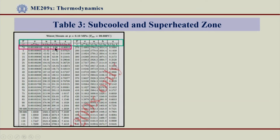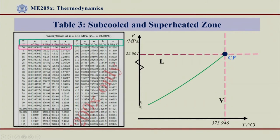Enthalpy is also very close to zero in this case. Of course, depending on the thermodynamic state, the specific volume will be determined for this pressure and temperature. Now, this is our P-T diagram, and with reference to this P-T diagram we can understand what is all shown in Table 3.